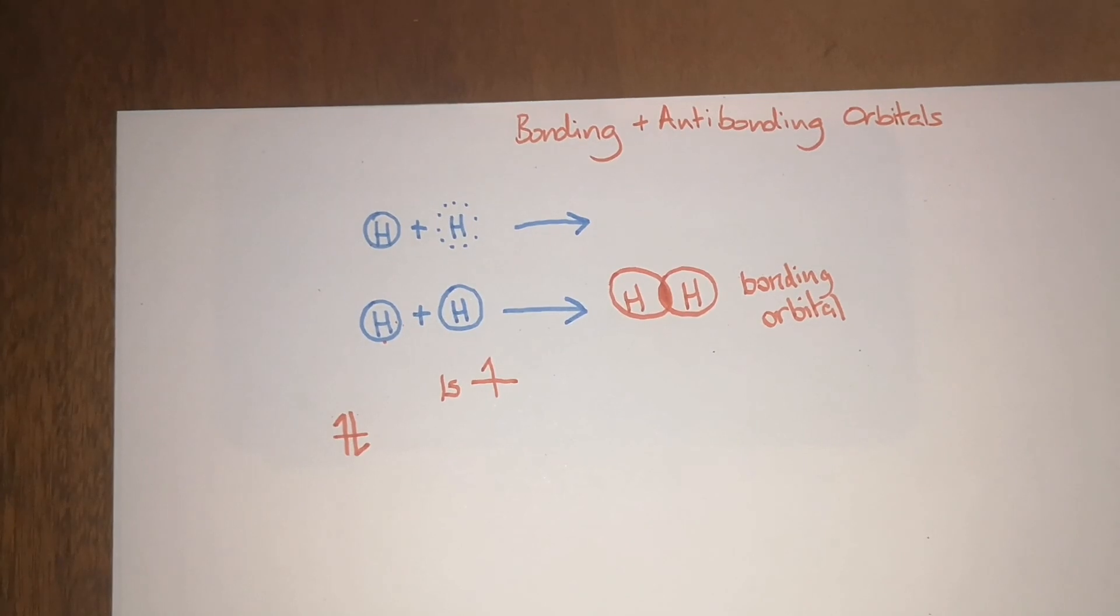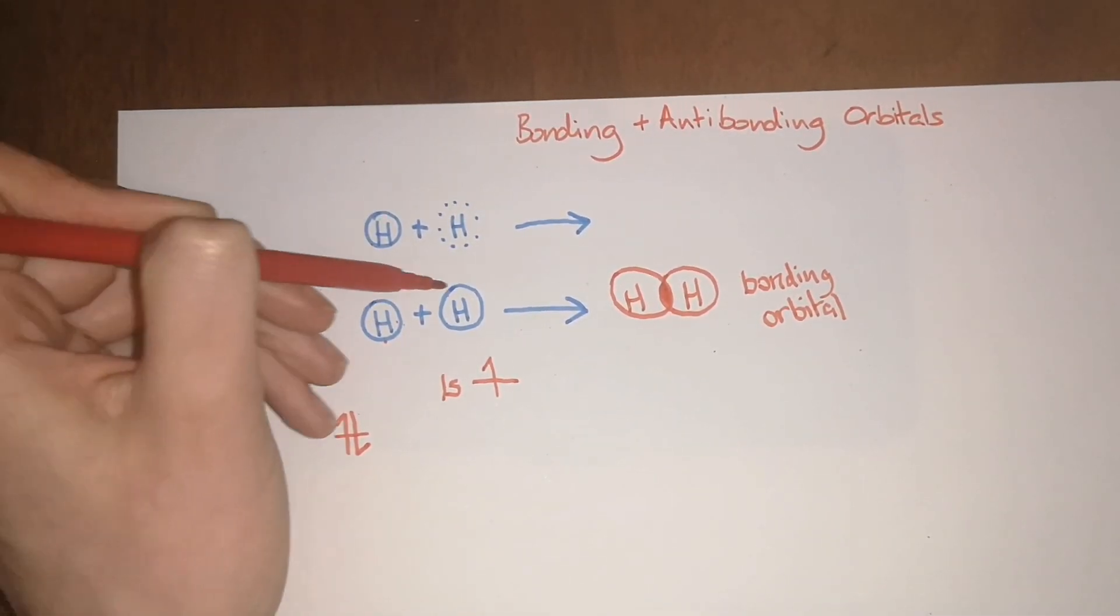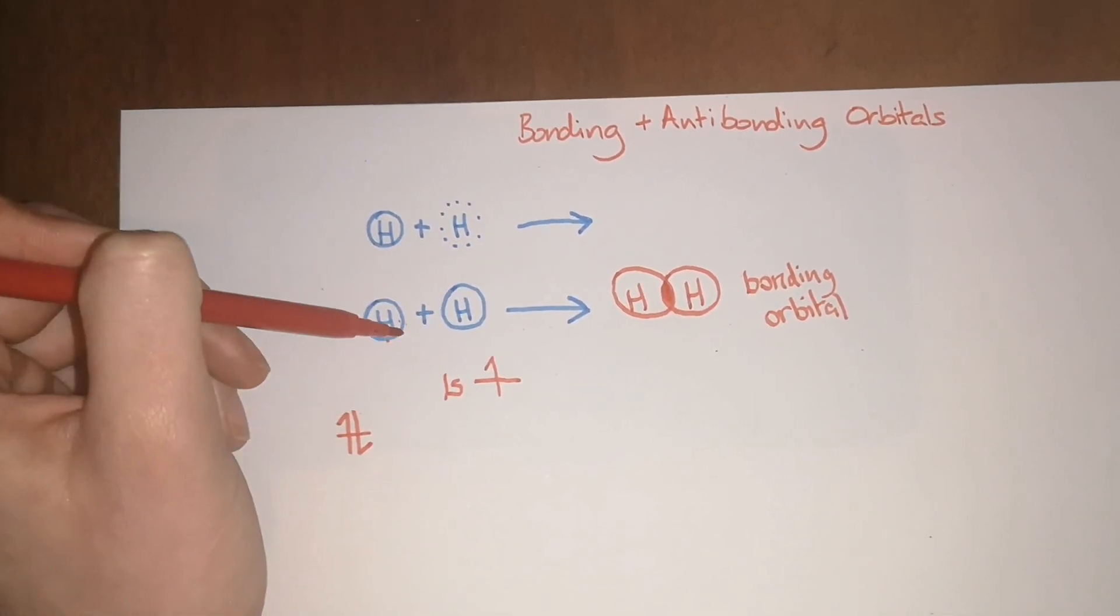Now, what happens when the orbitals are out of phase? In this case here—and this happens at the exact same time as this one down here.